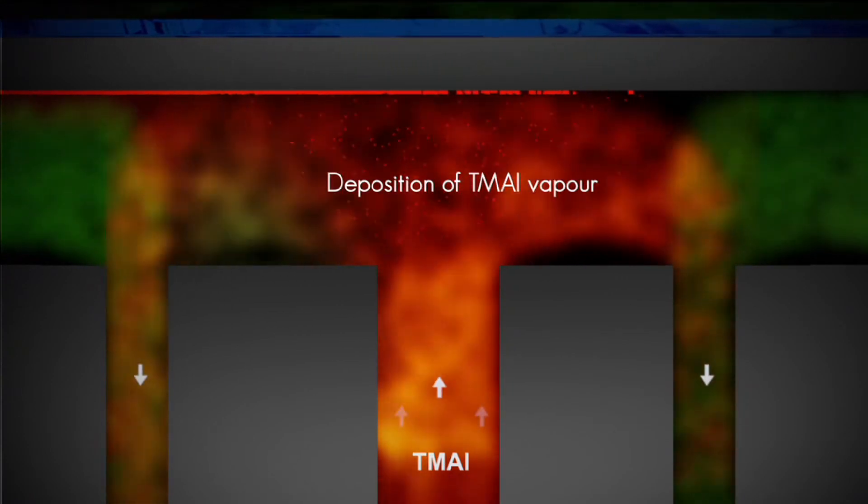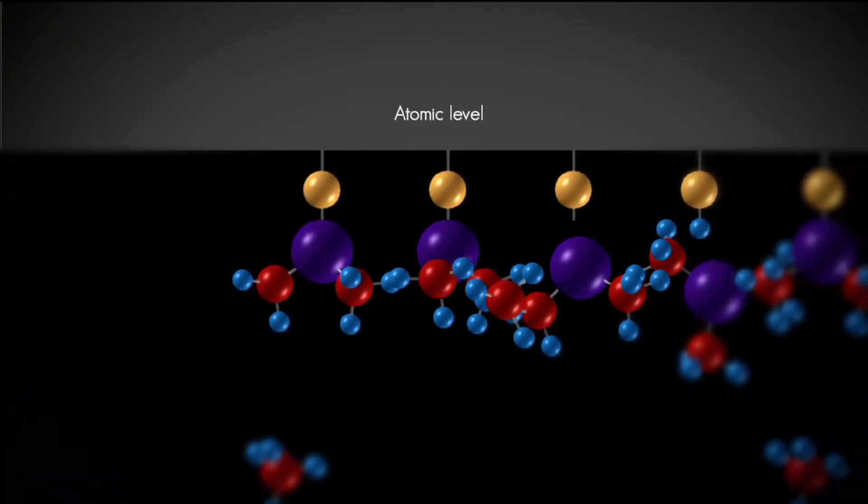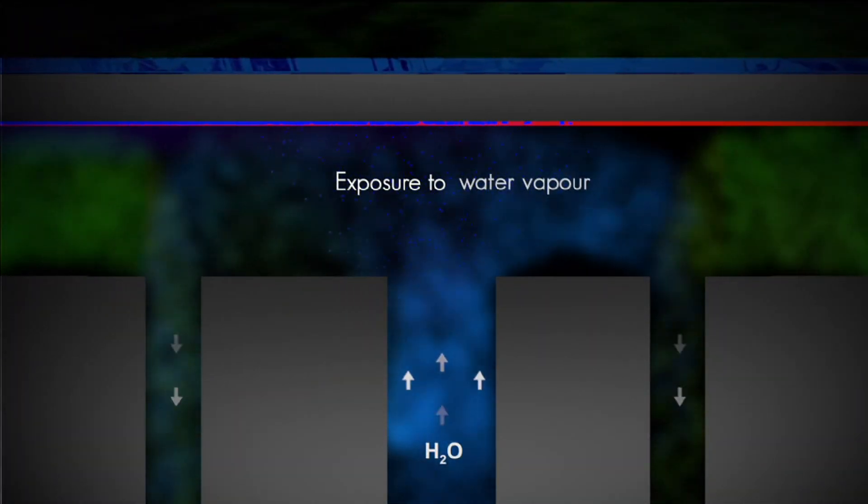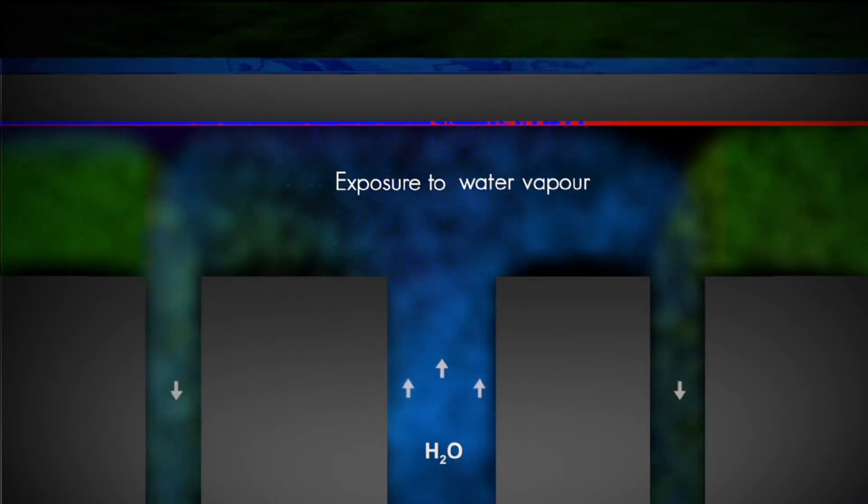When the wafer arrives at the TMA processing compartment, trimethylaluminium forms a monolayer on the surface, represented here at atomic level. In the second gas compartment, a chemical reaction produces the requested monolayer of aluminium oxide.